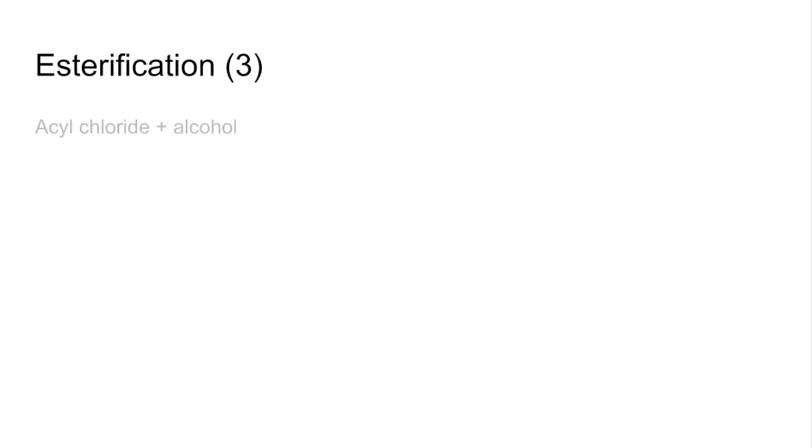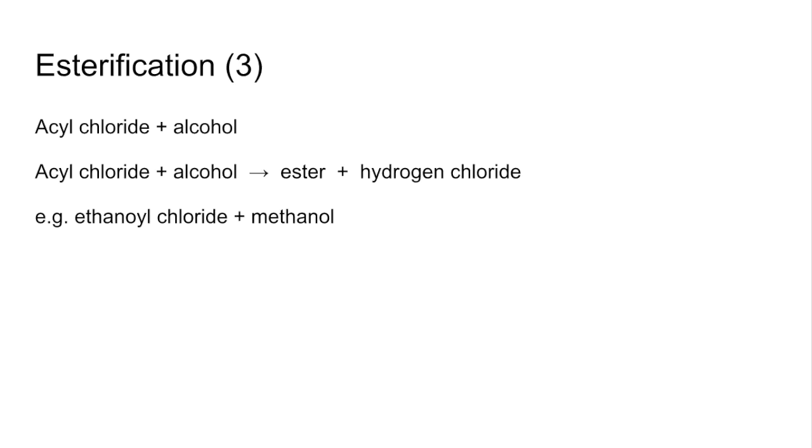And the final method is take an acyl chloride this time and again react it with an alcohol. So in general terms, acyl chloride plus alcohol gives ester and hydrogen chloride now. Example is going to be ethanoyl chloride plus methanol. And so here's the equation. Basically we're just replacing this Cl for the CH3O part and the H and the Cl combine to make HCl.